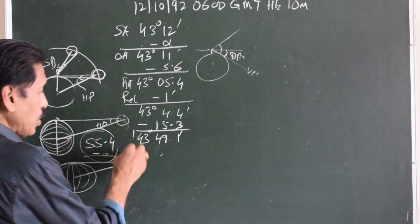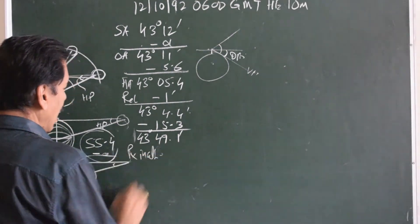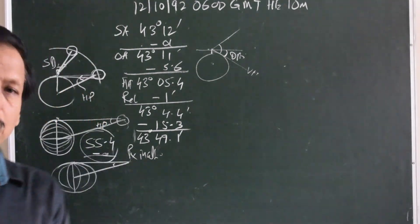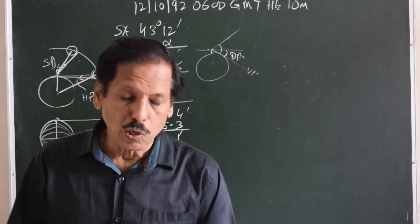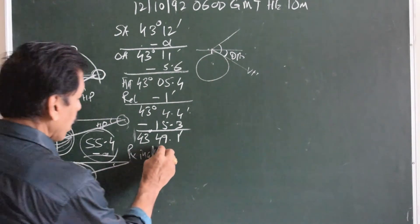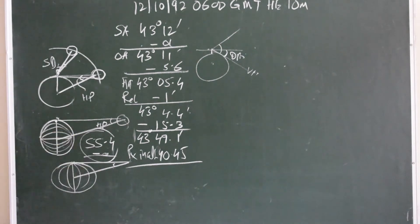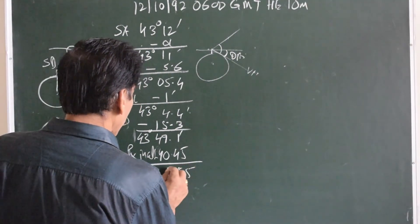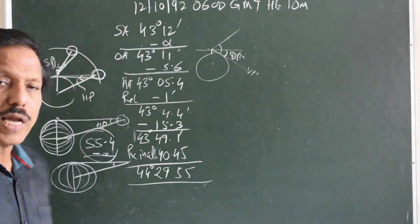In the altitude correction table, I need to put parallax in altitude. Parallax in altitude is horizontal parallax multiplied by cosine of apparent altitude. If you multiply horizontal parallax (55.4) by cosine of apparent altitude, you get approximately 40.45 minutes. Remember, reduction is always subtractive, but parallax in altitude is always positive. So the result is 44 degrees 29.55 minutes.